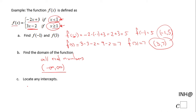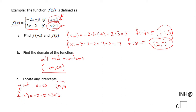Now we locate the intercepts. For the y-intercept we set x = 0. Since 0 is less than 1, we use the first piece: f(0) = -2(0) + 3 = 3. So the y-intercept is the point (0, 3).